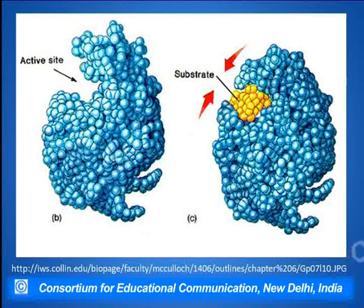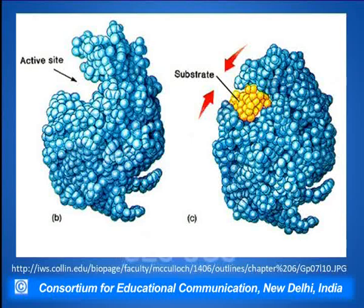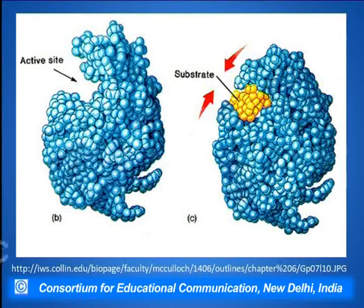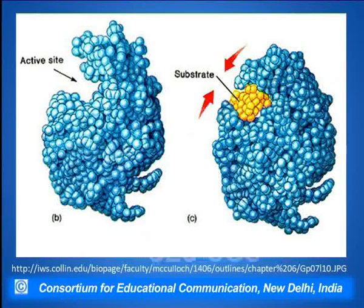We can see the enzyme active site into which the yellow-colored substrate is bound, and subsequently the enzyme-substrate complex converts into a product which will be released from the enzyme to free it for subsequent processes.